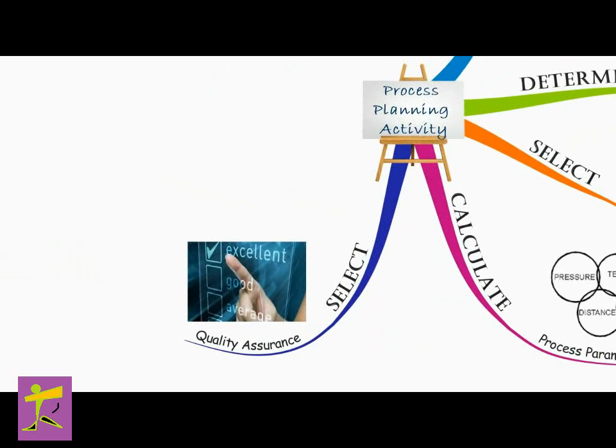Selecting quality assurance methods: The inspection criteria have to be specified by the process planner for the critical processing factors, such as dimensional and geometric tolerances and surface finish specifications, identified during the drawing interpretation stage. The tools and techniques to be used for quality assurance inspection are specified clearly. The overuse of quality assurance methods and inspection would increase the processing time and hence the manufacturing costs. Hence the proper balance should be made between achieving product quality and avoiding unnecessary checking.